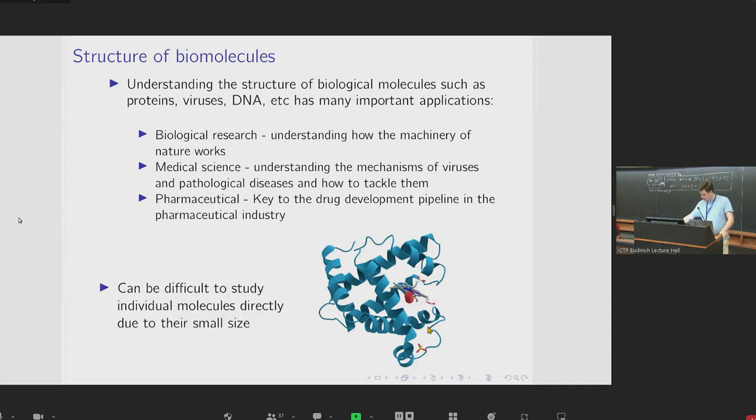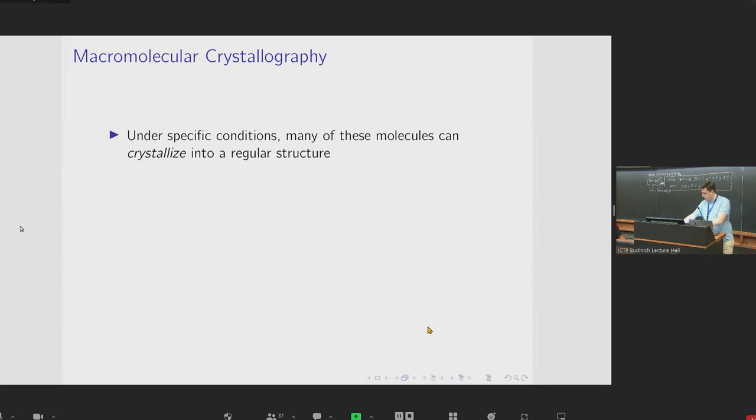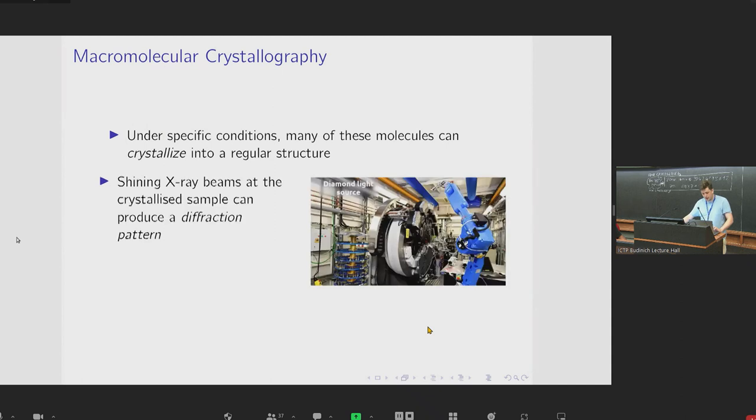However, given the small size of these molecules, it can be difficult to study their structure directly. However, under specific conditions, many of these molecules of interest can be forced to crystallize into a regular structure. And then shining X-ray beams at the sample from a scientific light source, such as the diamond light source that we have in the UK, can produce a diffraction pattern. And this diffraction pattern encodes information about the crystal structure.